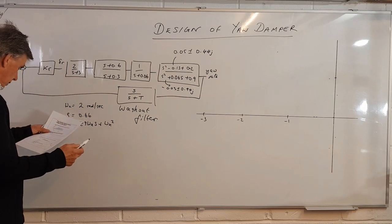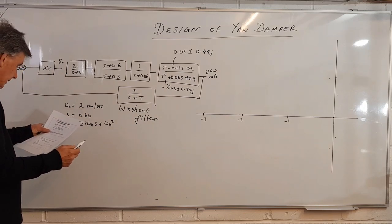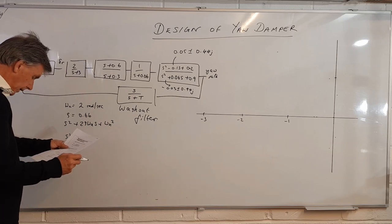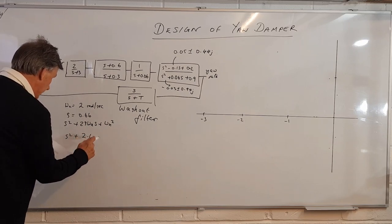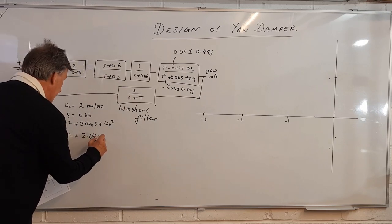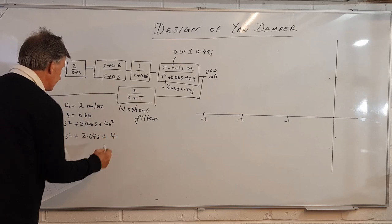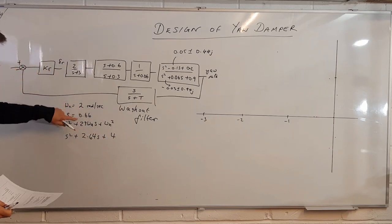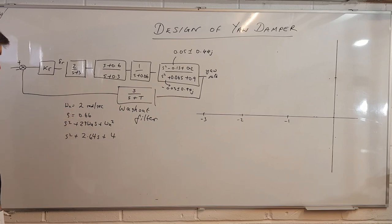And 4 times 6.6 gives us s squared plus 2.64s plus 4. The sum is quite easy: 2 times 2 zeta of 4, and this part is 2 times 2 times 0.66.